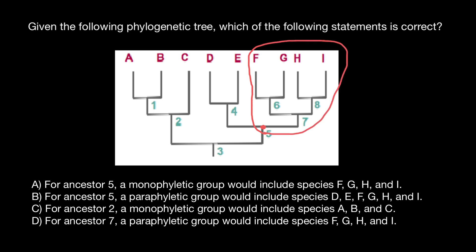Actually, this is a false statement. Why? Because a monophyletic group for ancestor number five would include all the descendants — the circle has to be larger. In a monophyletic group, when we specify a recent common ancestor, we should include all the descendants of this common ancestor.